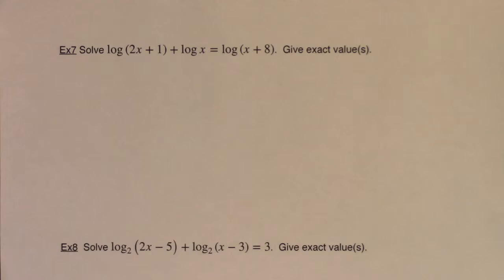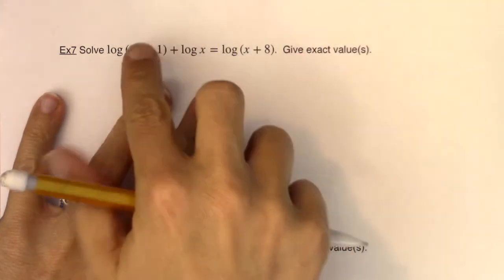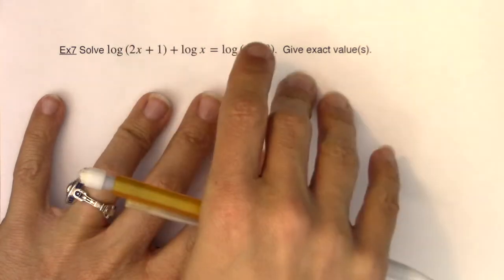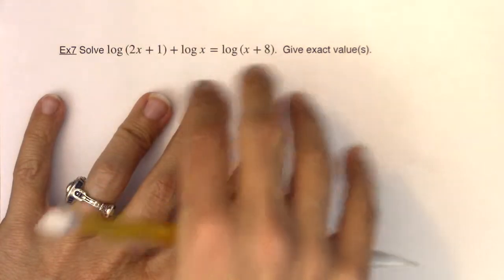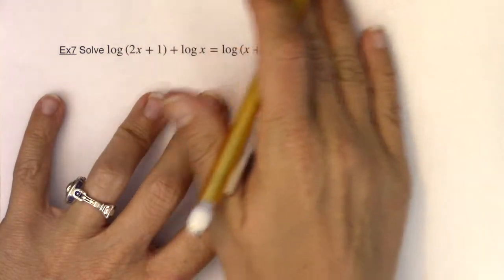Hey Math 31, we're still going to solve a logarithmic equation in example 7, but example 7 differs from example 6 in that in example 7 you can see I have logarithms on both sides of the equal sign and that was different from example 6 where I only had a logarithm on one side of the equal sign.